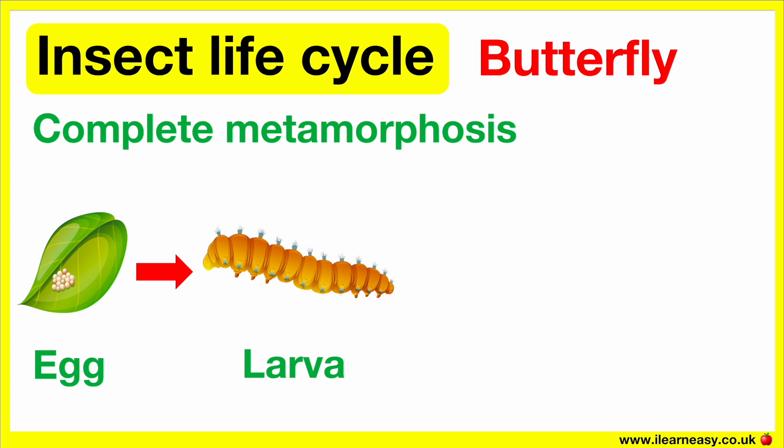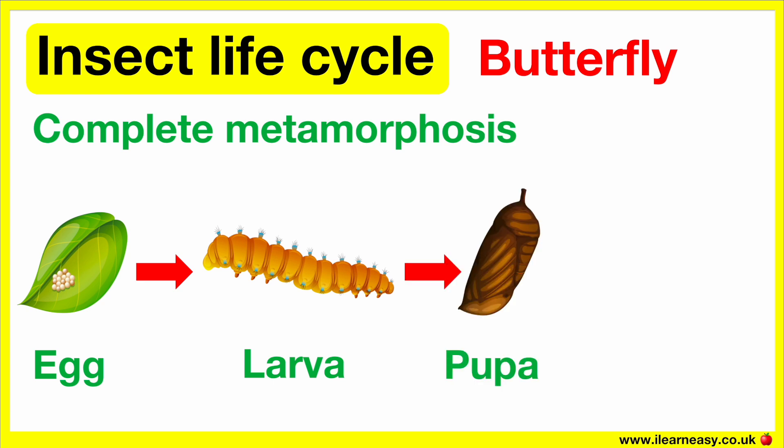The caterpillar must eat so it can grow. Once it grows, it splits its skin and sheds a few times. When the caterpillar has fully grown, it forms itself into a pupa. This is a type of vessel in which the caterpillar changes into a butterfly. The pupa of the butterfly is also called a chrysalis. This stage can last for weeks, months, or even longer.